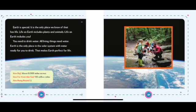You need to drink water. All living things need water. Earth is the only place in the solar system with water ready for you to drink. That makes Earth perfect for life. How big? About 8,000 miles across. How far from the sun? 93 million miles. How many moons? One.